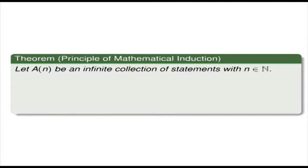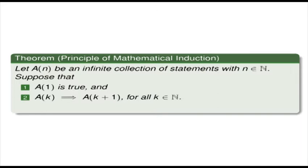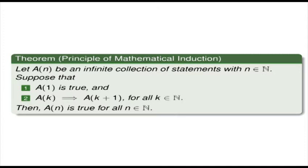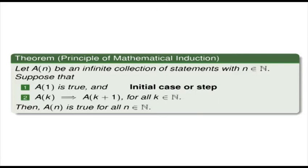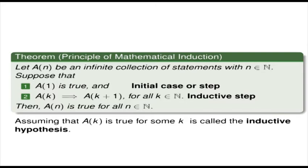Now let's do the big theorem: the principle of mathematical induction. We start with: let A(n) be an infinite collection of statements with n in the natural numbers. Suppose that, first, A1 is true — i.e., the first statement is true. And secondly, assume that A(k) implies that A(k+1) is true for all k in the natural numbers. Then the conclusion is that A(n) is true for all n in the natural numbers. The first condition is called the initial case or step. The second condition is the inductive step. Assuming that A(k) is true for some k is called the inductive hypothesis.